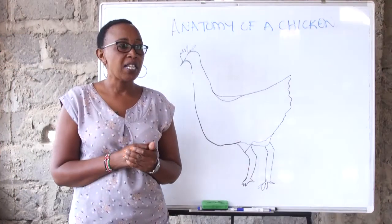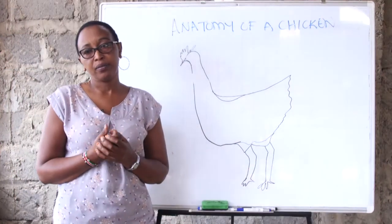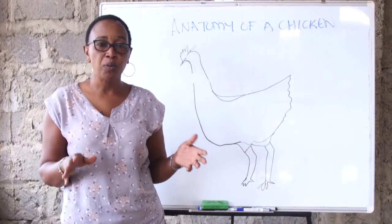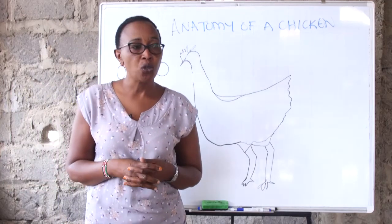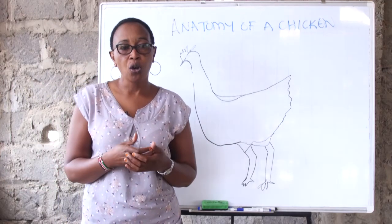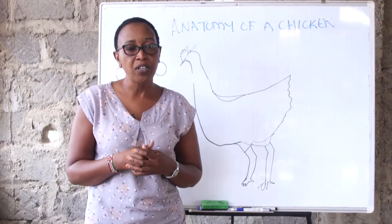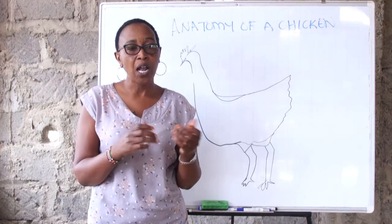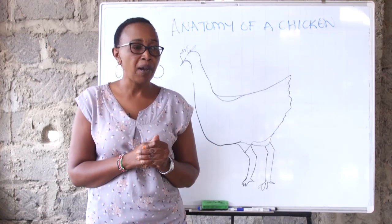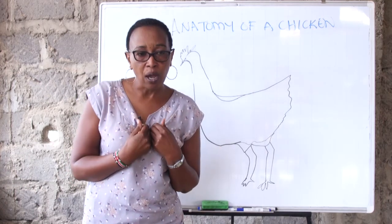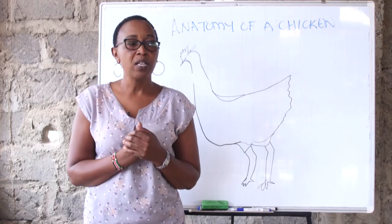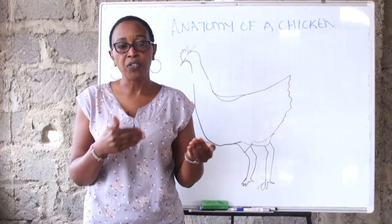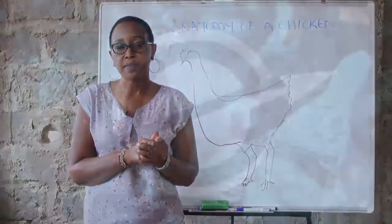The bird also has legs. So that's basically the anatomy of the bird — you now know what organs are available in the bird and what are not. All the organs that us human beings have, the bird also has, with the addition of the crop and the proventriculus.